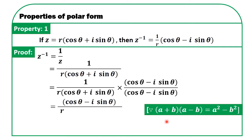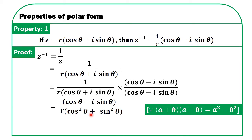The denominator is of the form (A + B)(A − B) = A² − B², giving cos²θ − i² sin²θ. Since i² = −1, we get cos²θ + sin²θ = 1. Therefore z⁻¹ = (1/R)(cos θ − i sin θ). This is what we wanted to prove. Hence proved.